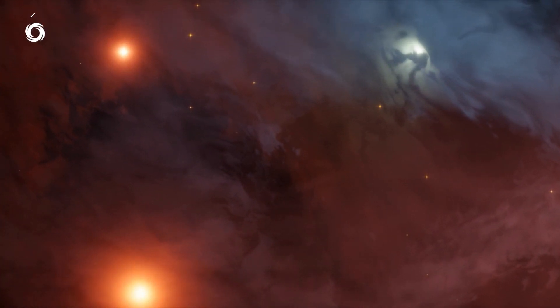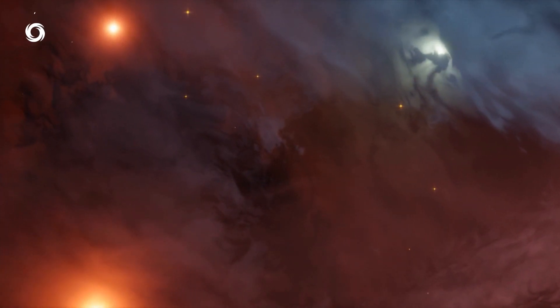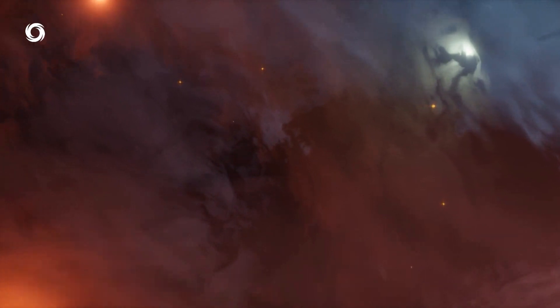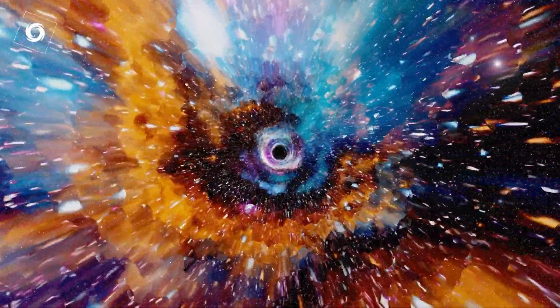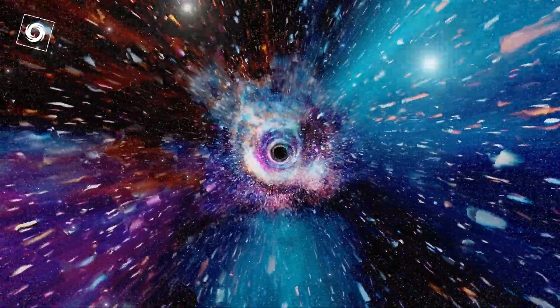They found an unusual object that appeared to be spewing gas and dust at a speed of 30% the speed of light, which is impossible for a black hole. Scientists suggested that this object might be a white hole, but further observations are needed to confirm it.